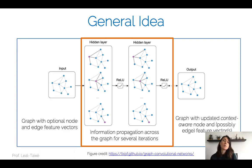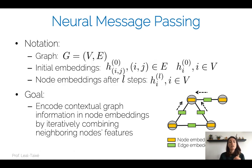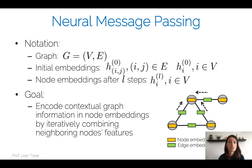The interesting part is the information propagation step itself. How does this actually happen, and how can I overcome the key challenges — namely dealing with an arbitrary amount of nodes and edges, and ensuring that my operations are permutation invariant? Let's introduce some notation. We will always work on a graph G with a set of vertices V (the nodes) and a set of connections or edges E.